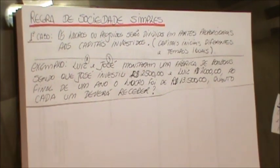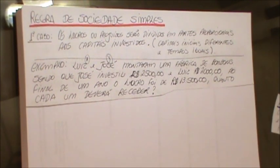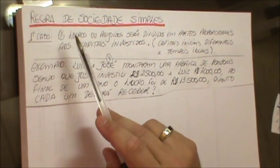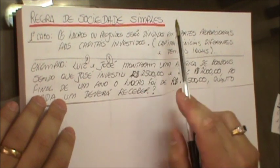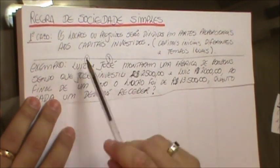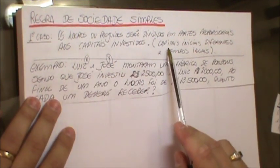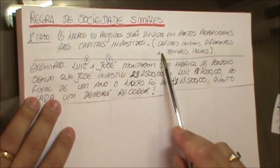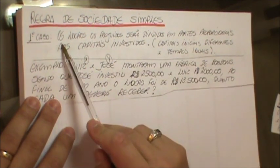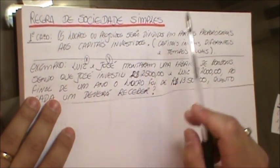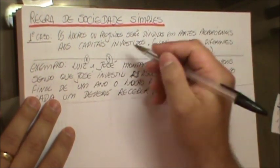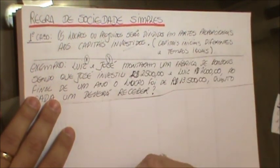Muito bem, alunos. Como já foi informado, hoje vamos estudar a regra de sociedade simples. Primeiro caso: para capitais iniciais diferentes e tempos iguais, os lucros ou prejuízos serão divididos em partes proporcionais aos capitais investidos.